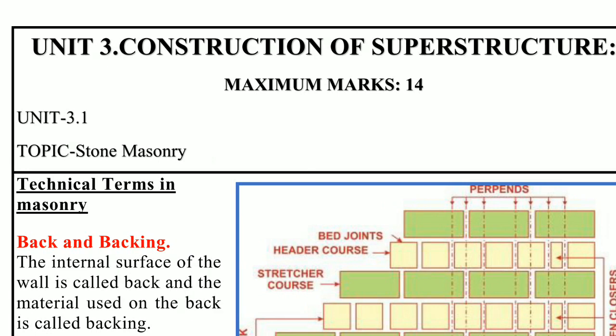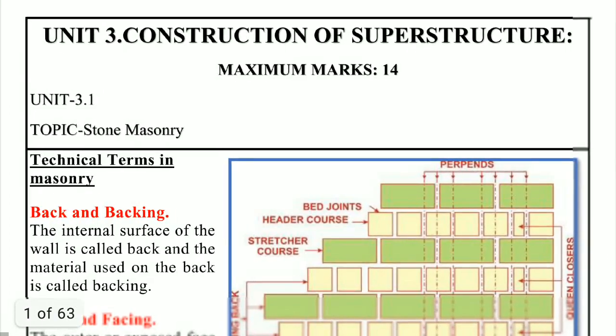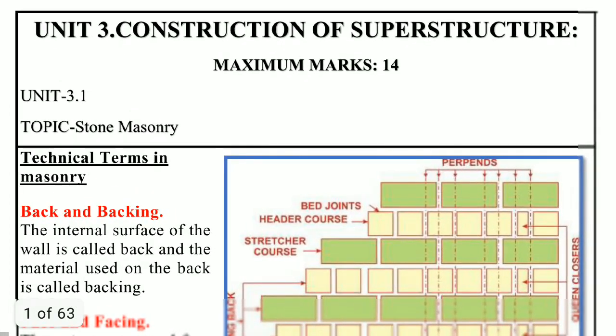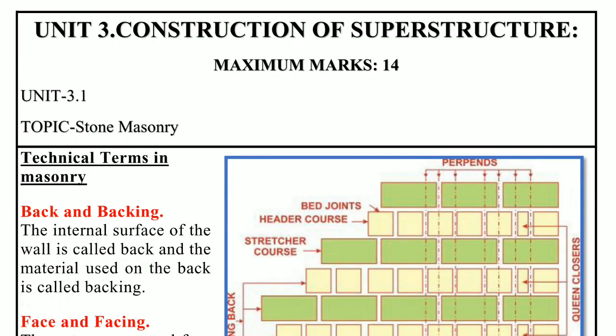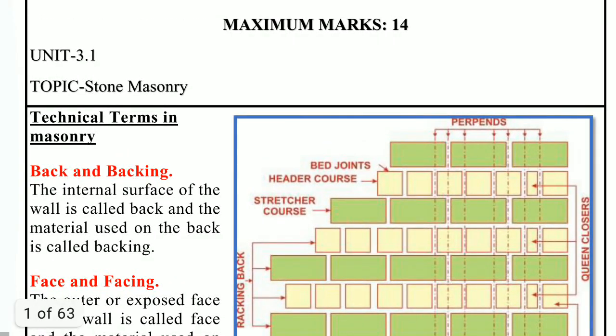In unit number 3, we will discuss about superstructure. We all know the definition of superstructure — anything above ground level is called superstructure. In this superstructure, the first part is masonry works.